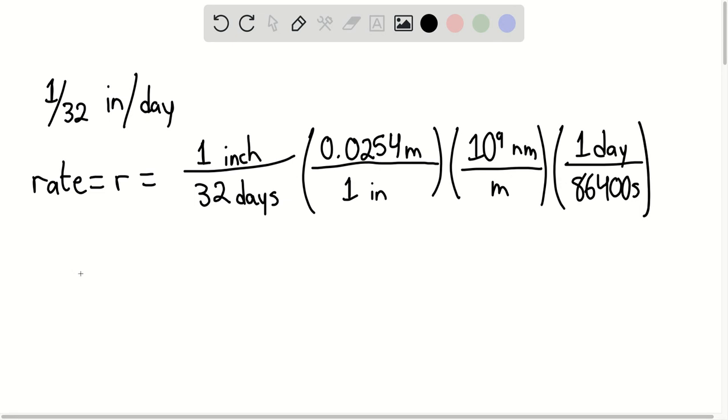So we can say that the rate R equals 9.2 nanometers per second. That is the end of the solution. Thank you for watching.